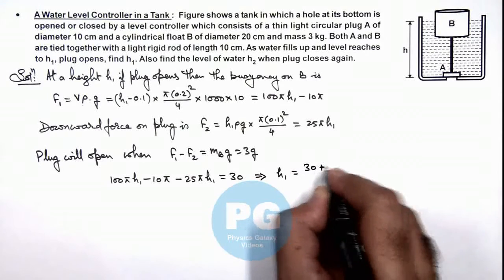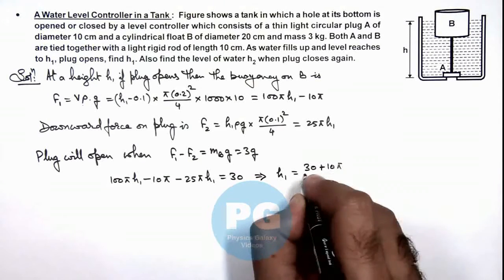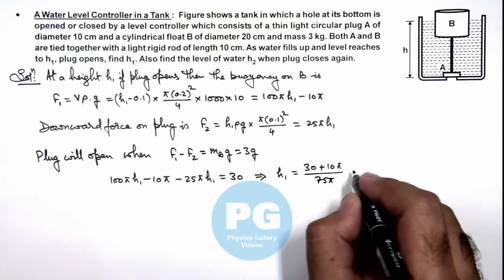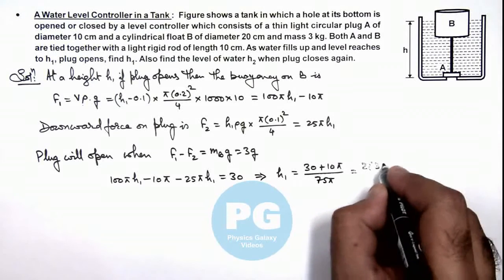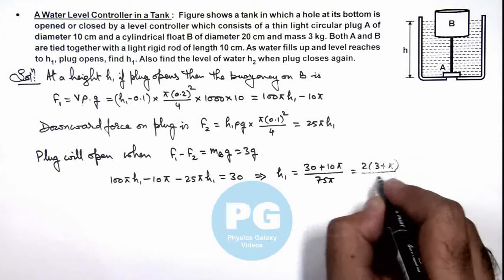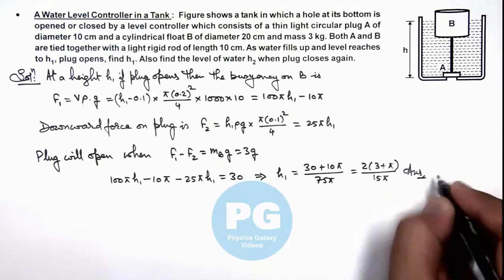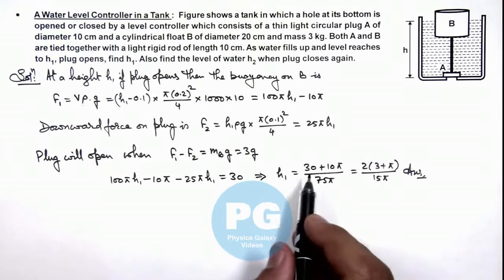Simplifying this value we get h₁ is (30 + 10π)/(75π), or twice (3 + π)/(15π). That is the result for the height h₁ of water at which the plug opens.